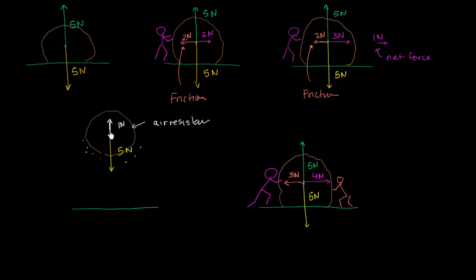In the falling rock scenario, we only have forces acting in the vertical direction. You have gravity at 5 Newtons downwards and air resistance as a counteracting force of 1 Newton upward, but they don't completely balance out — you still have a net force of 4 Newtons downwards. That is an unbalanced situation. Finally, in the last scenario, the normal force and gravity are balanced in the vertical direction, but horizontally the 4 Newtons push to the right exceeds the 3 Newtons going left, giving a net force of 1 Newton to the right. This is again a scenario with unbalanced forces.